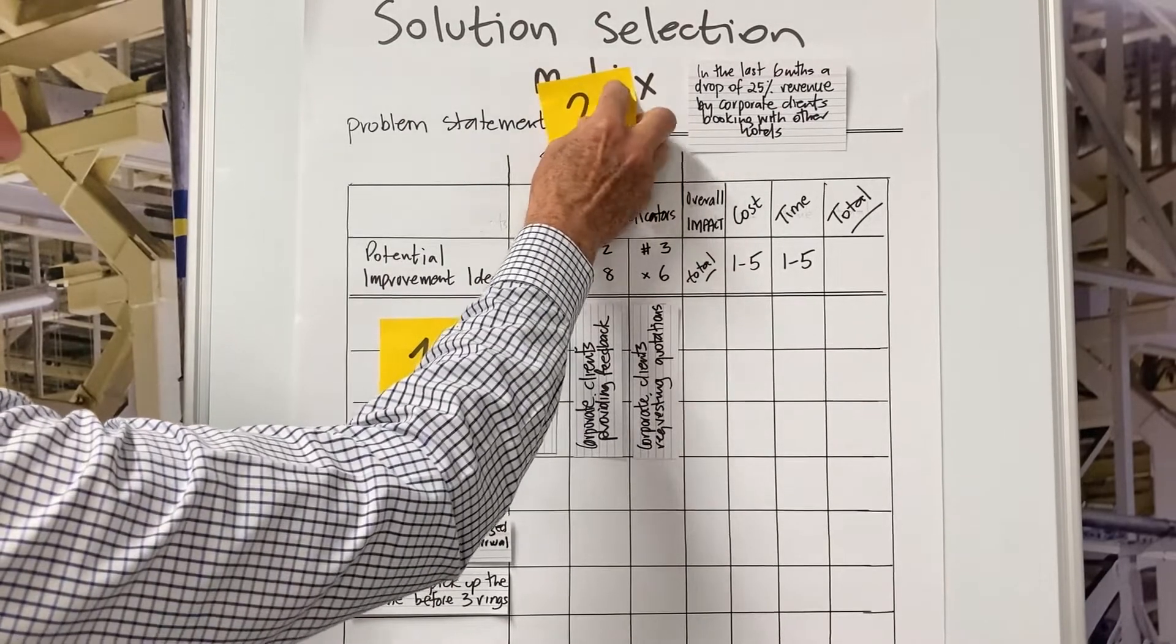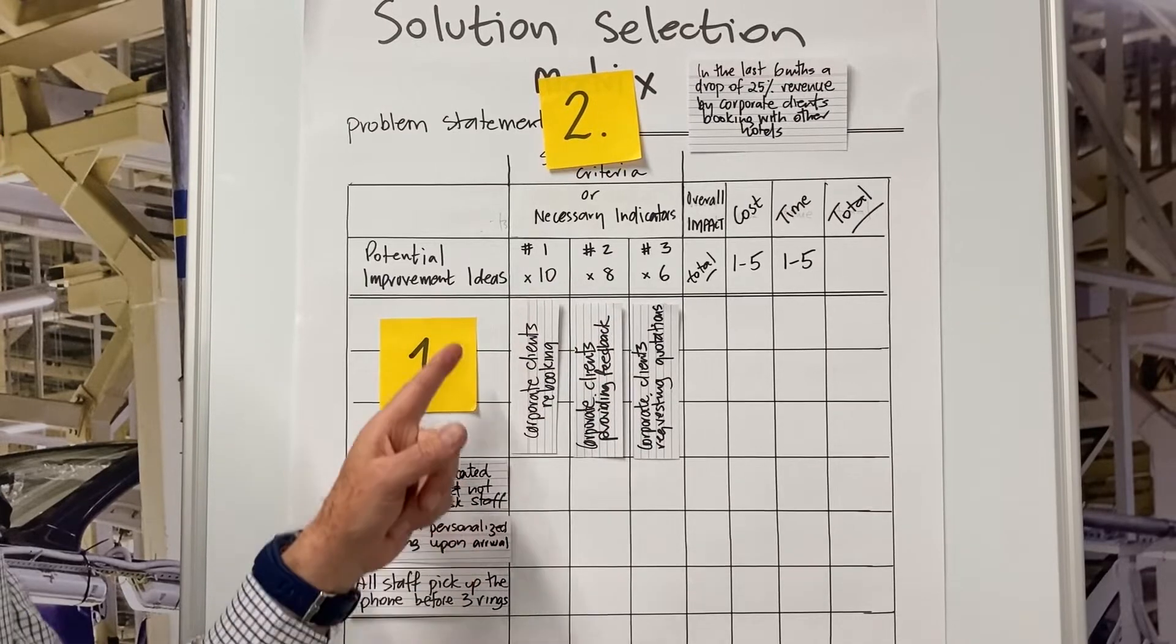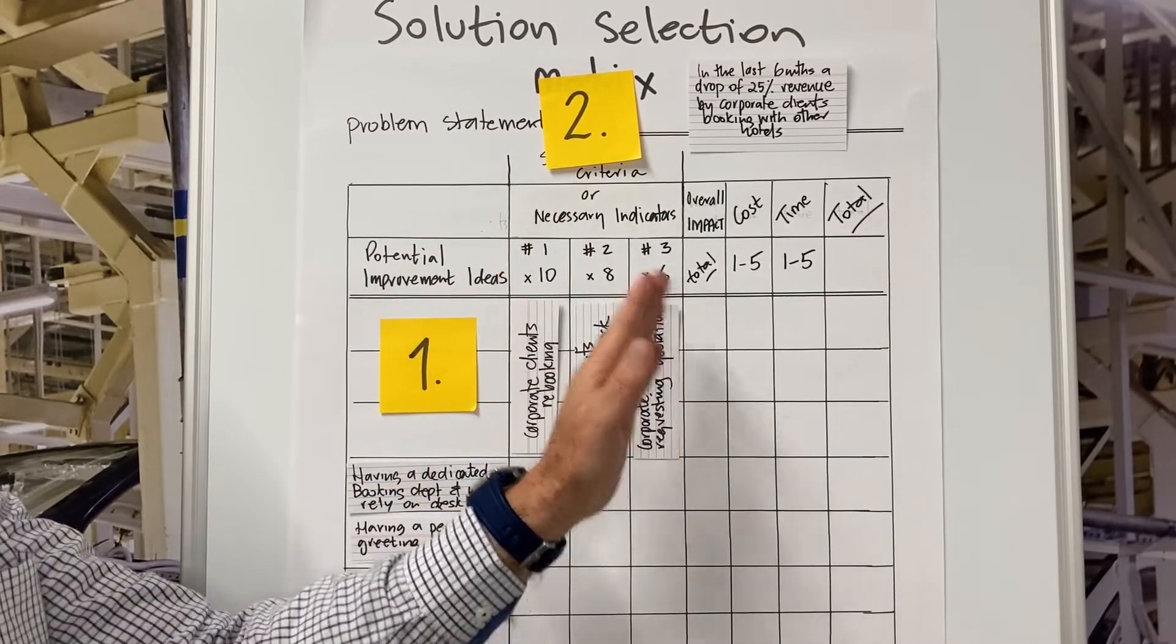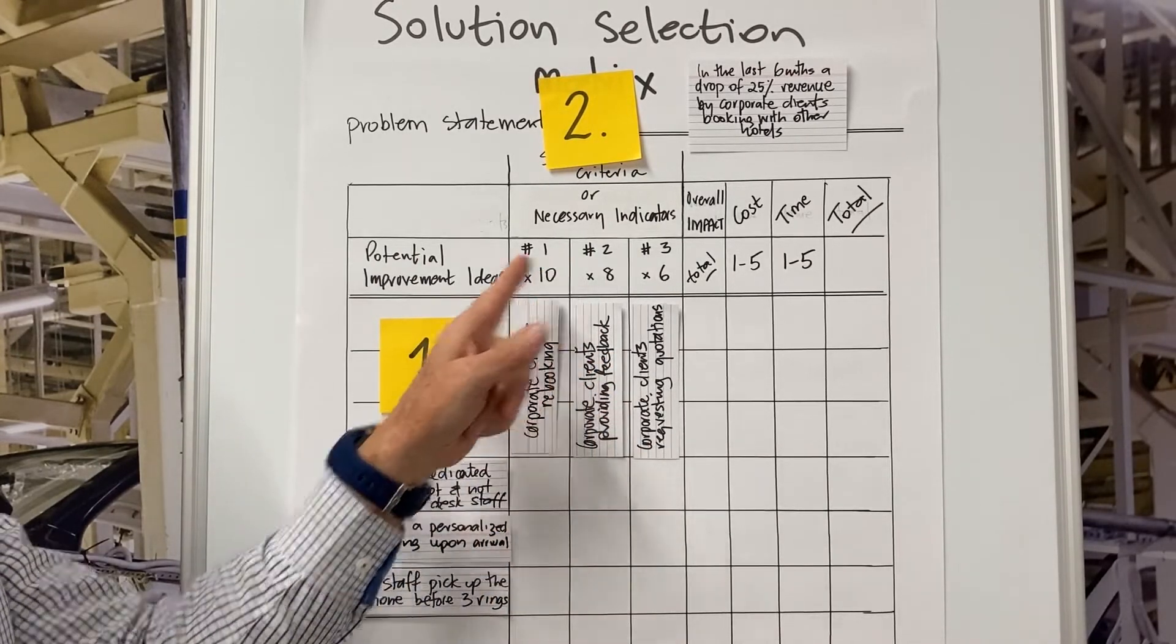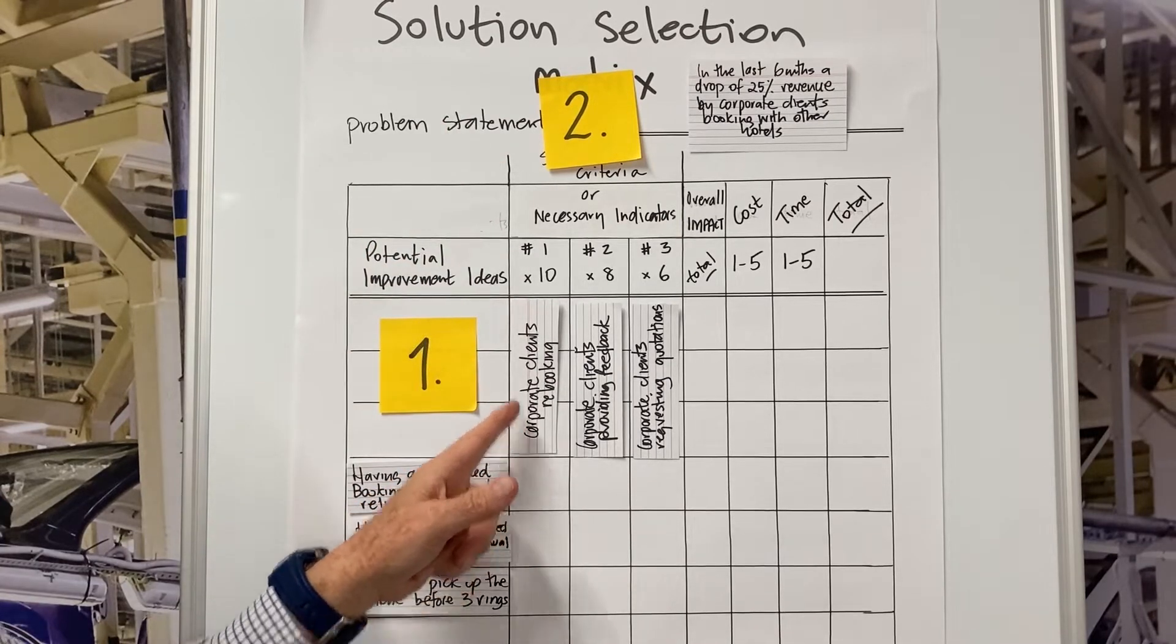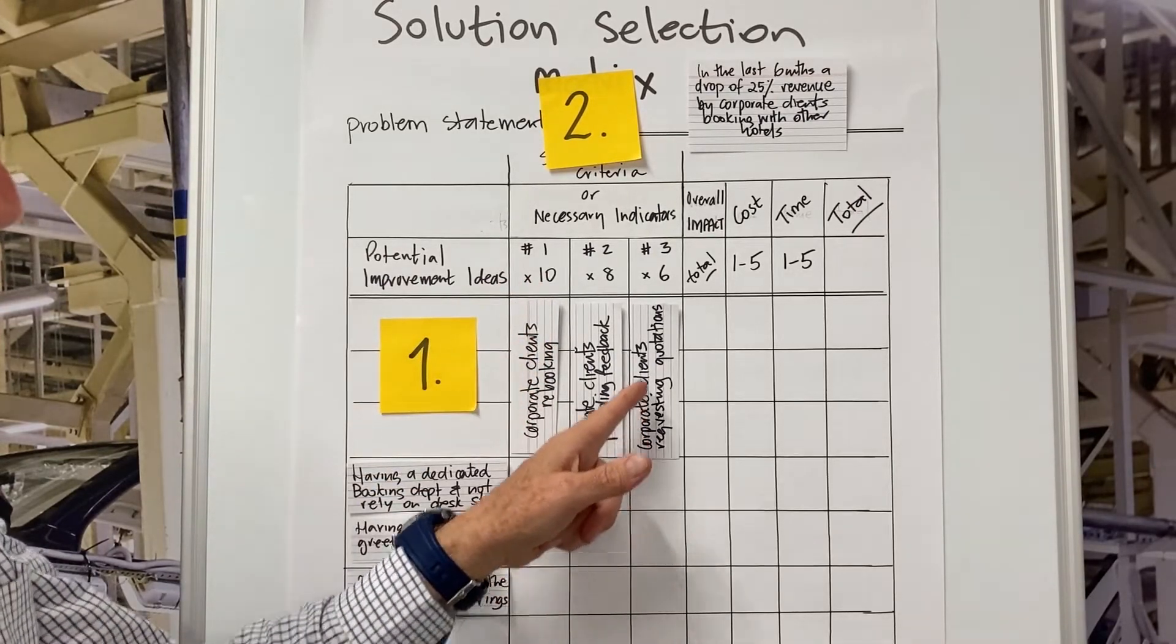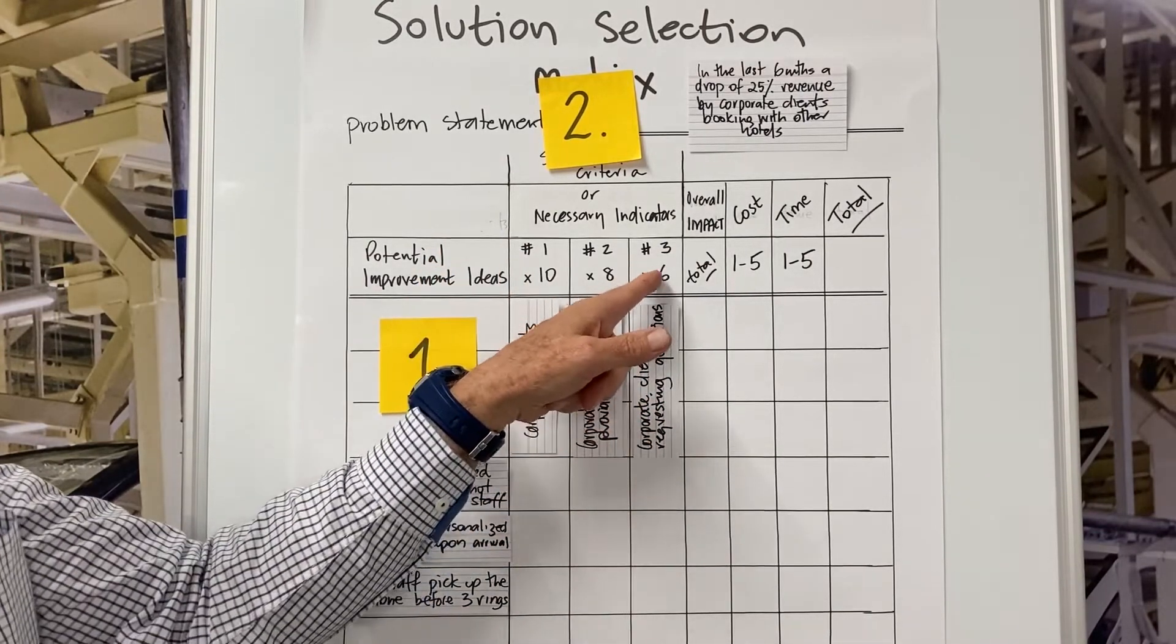So step number two is where we come up with three to four success criteria. These are the indicators that would tell us we're solving the problem and rate these of importance on a scale one to 10, 10 being the best indicator of success. This is a weighting of the level of importance of the success criteria. So for example, in this demonstration example, corporate clients rebooking is one of the best indicators of success. So we've scored a 10. And down to corporate clients requesting quotations is not as best an indicator and we're scoring that a six.